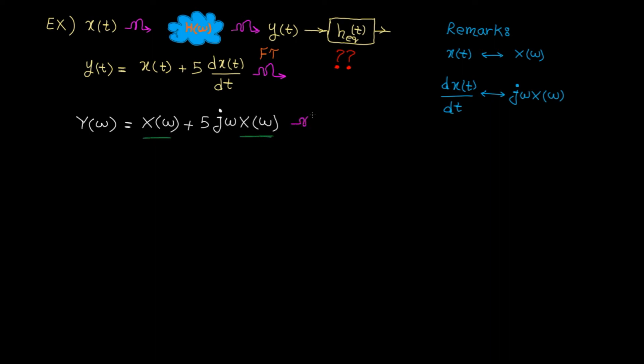Let's factor out X(ω). Based on my lecture on frequency response, we know Y(ω) divided by X(ω) is basically H(ω), which is 1 plus 5jω here.